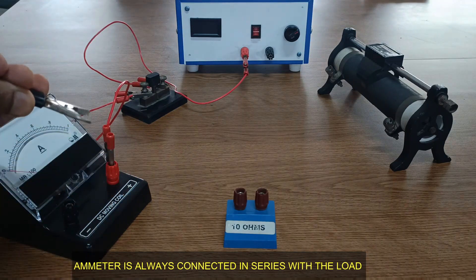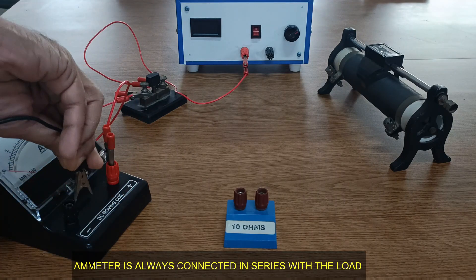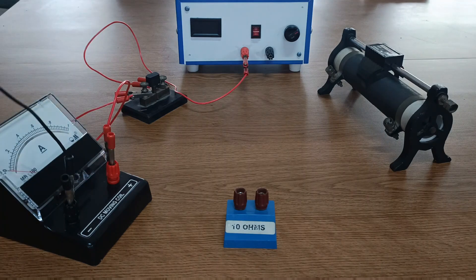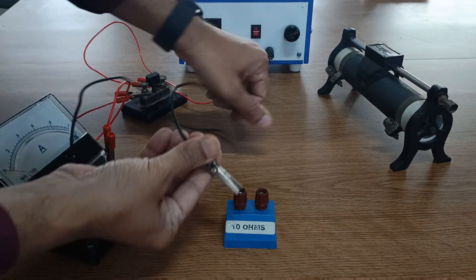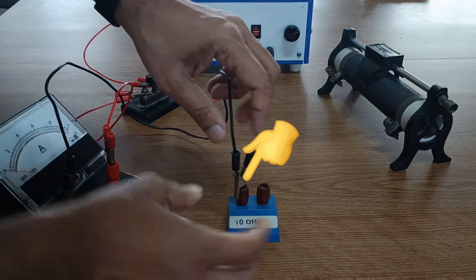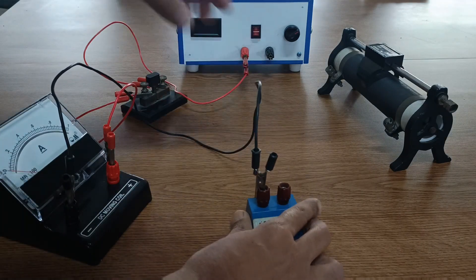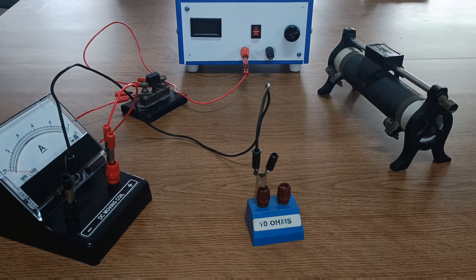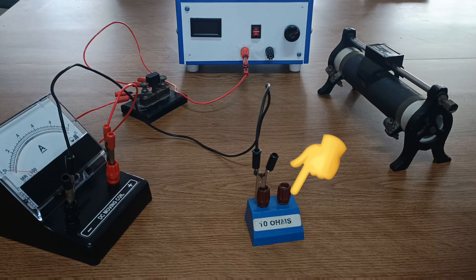The black negative end of the ammeter is to be connected with any one of the ends of the unknown resistor. This terminal of the resistor will be referred to as the positive terminal as current enters from here, and the end from which the current leaves the unknown resistor is said to be negative.